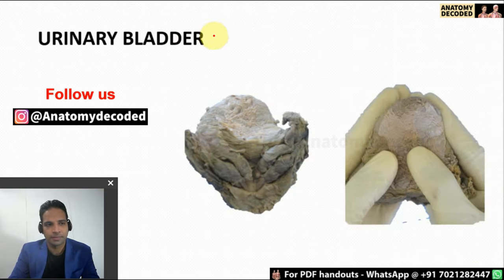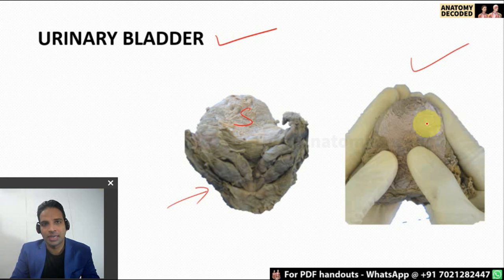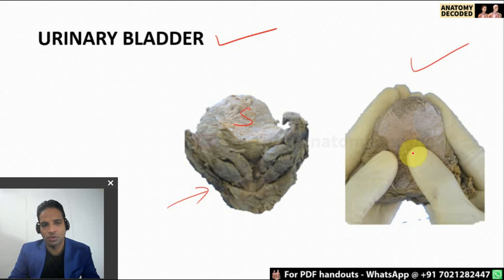Now let's start with the urinary bladder. Here we can see the urinary bladder viewed from the posterior aspect — this is the posterior view showing the superior surface. This image shows how to hold the urinary bladder in anatomical position — it is being held with both hands, as midline structures are always held with both hands. The four fingers are along the inferolateral surface and the thumb is on the superior surface.